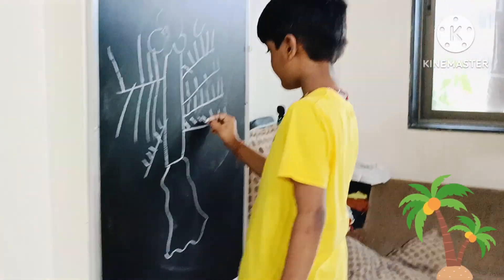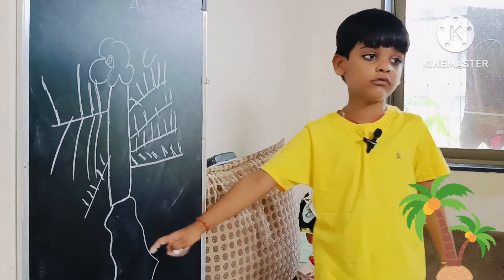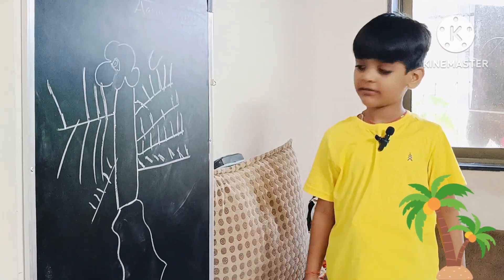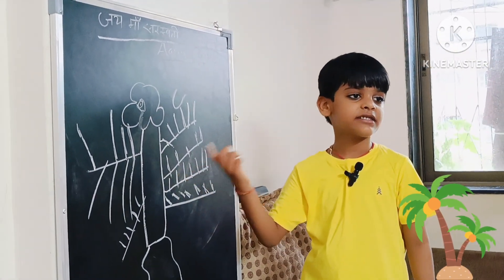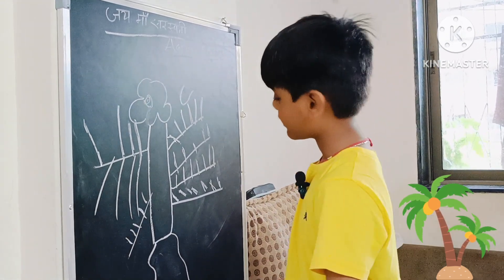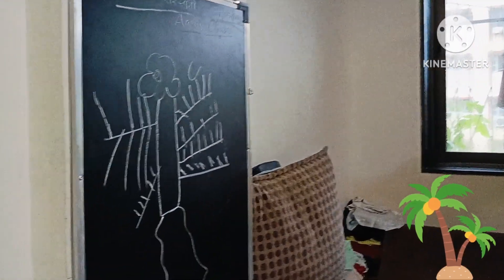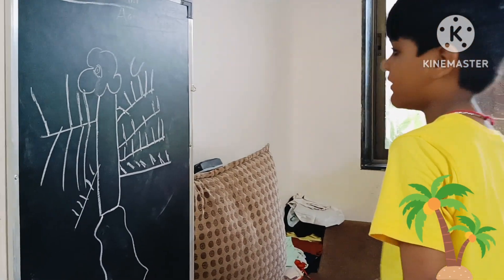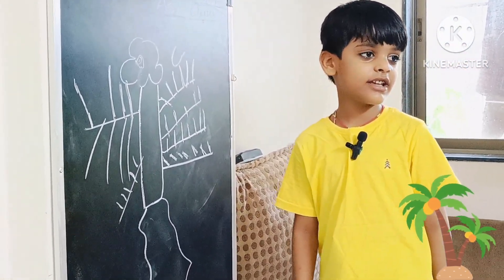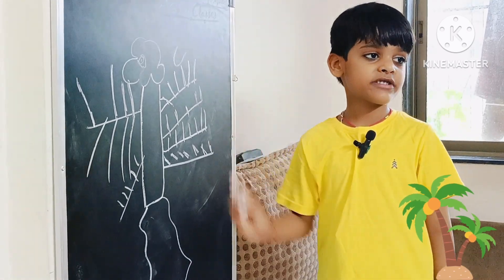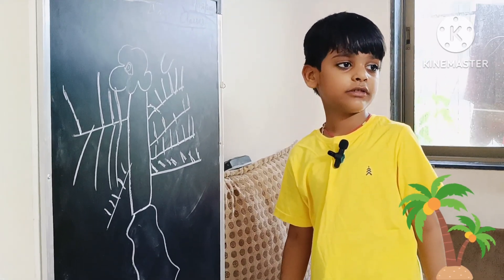Oh my god, it's such a big tree — because the tree grows with its own roots and the roots help the branches grow. It absorbs minerals and vitamins. Oh I see. And carbon dioxide, yes.